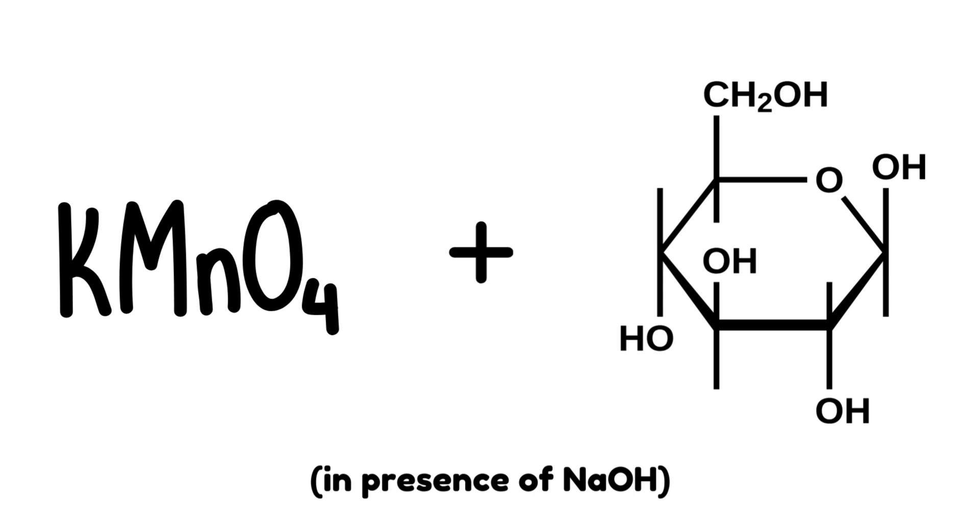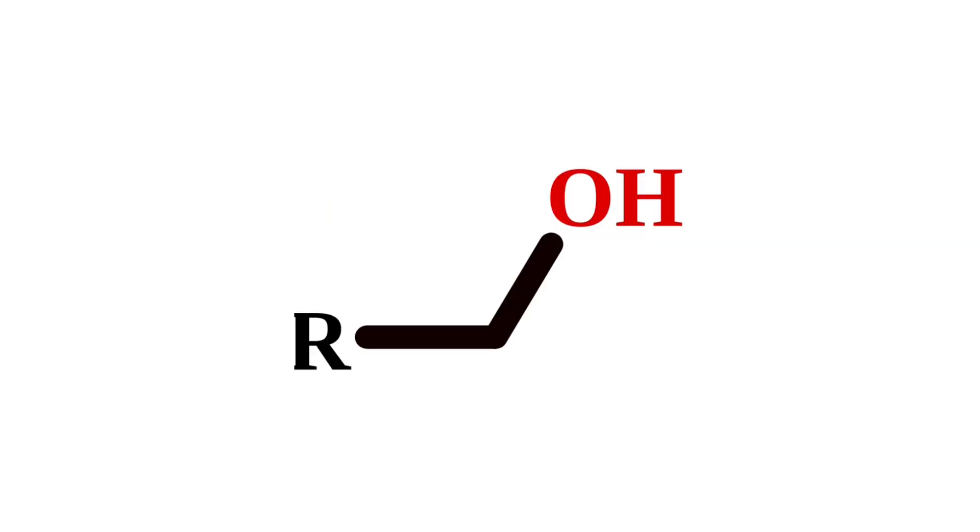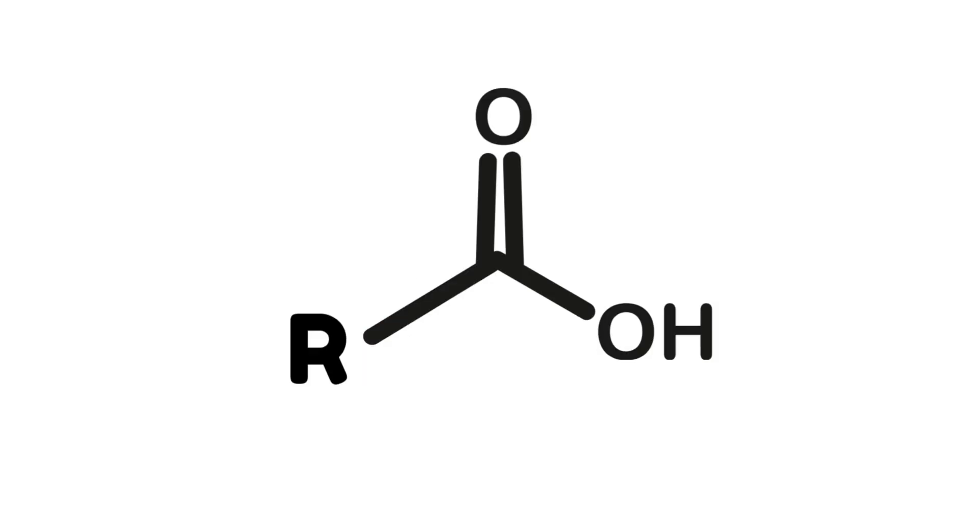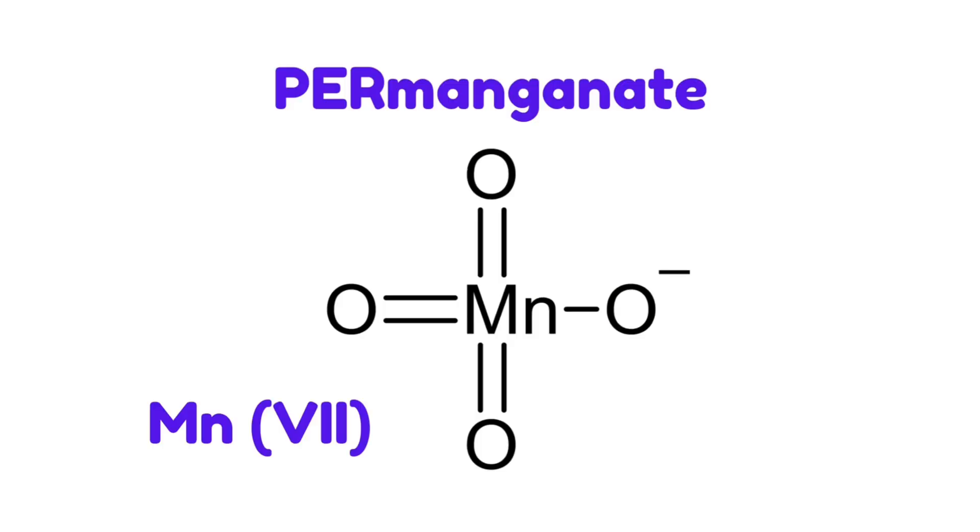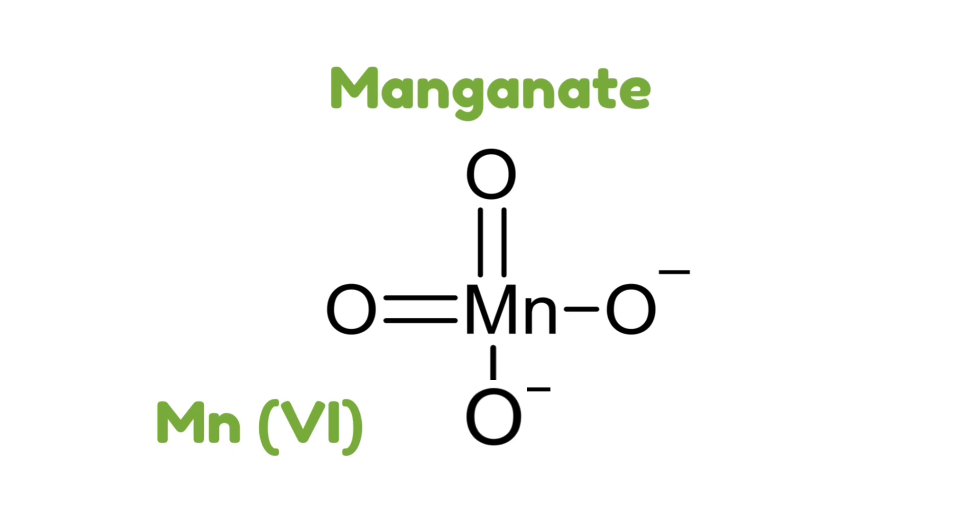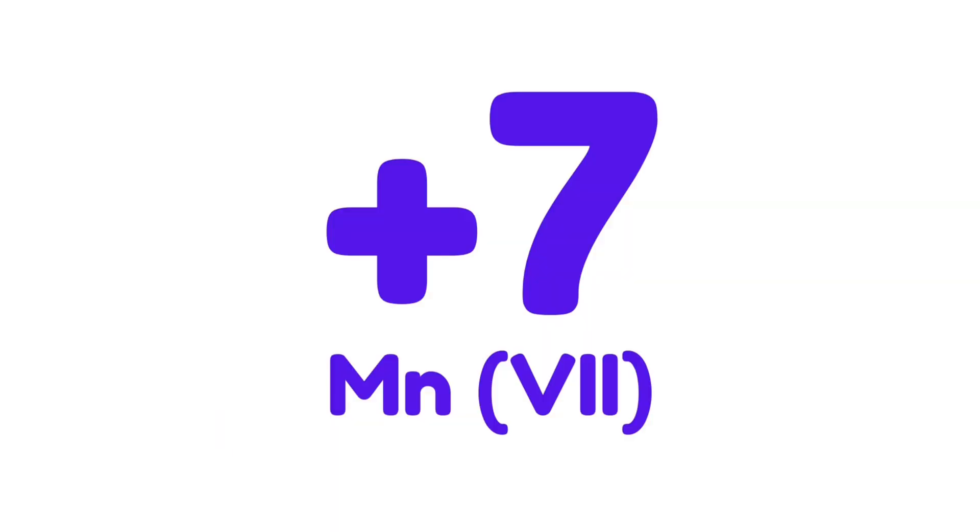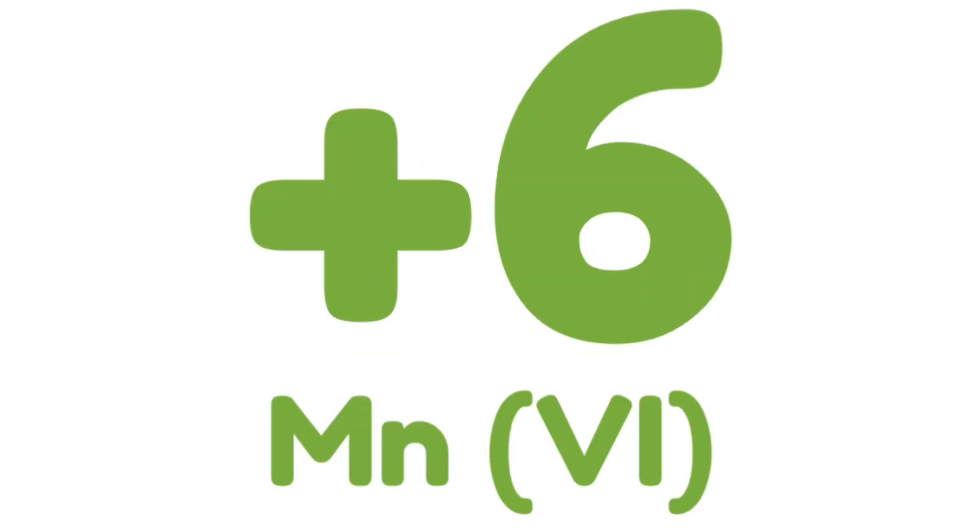When the permanganate reacts with the sugar, it usually attacks at this primary alcohol site, which can readily be oxidized by a strong oxidizer like our permanganate into a carboxylic acid through a pretty long mechanism, which I won't include here. In the end, the permanganate will be reduced into manganate, where the manganese instead bears a 6 plus oxidation state instead of the 7 plus. Here, the 6 plus oxidation state is now a green color.